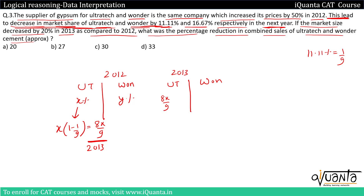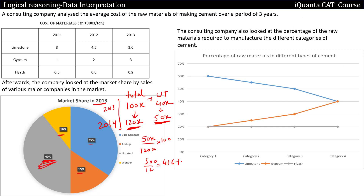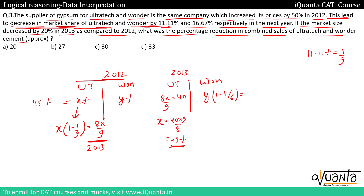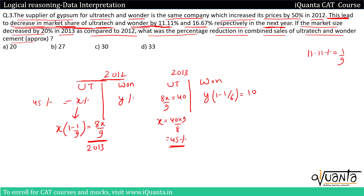Similarly for Wonder: it decreased by 16.67% (= 1/6), so y × (1 − 1/6) = 10%, giving y = 12%. So Wonder's market share in 2012 was 12%. This means in 2012, Ultratech had 45% and Wonder had 12% of the market.